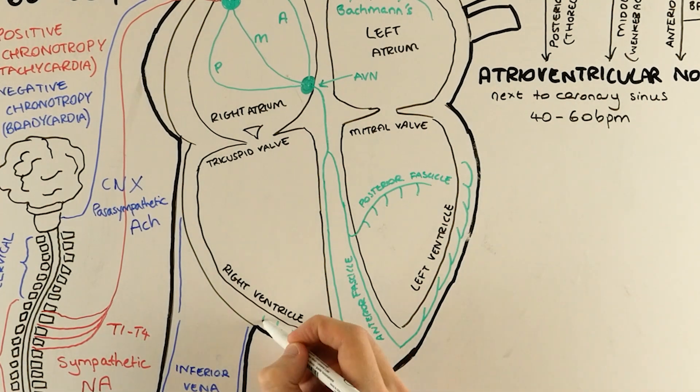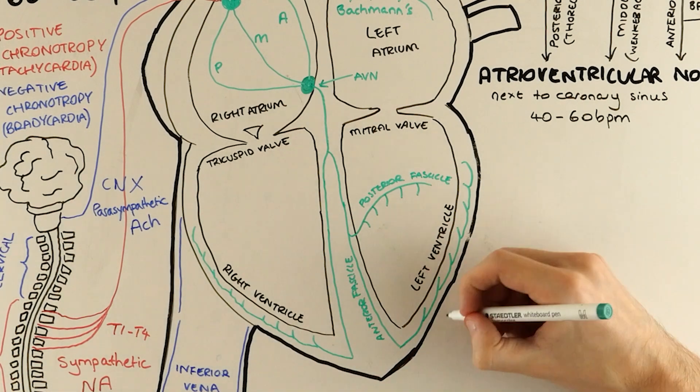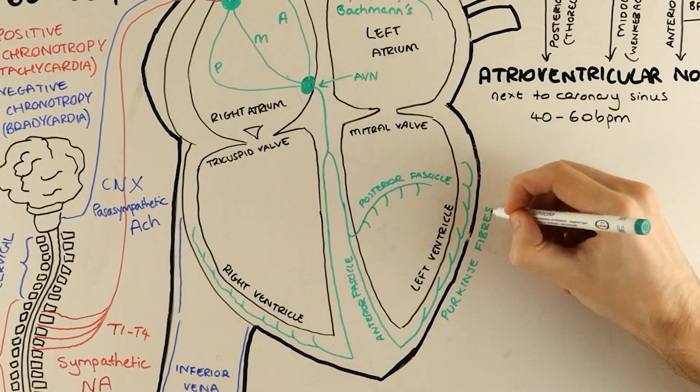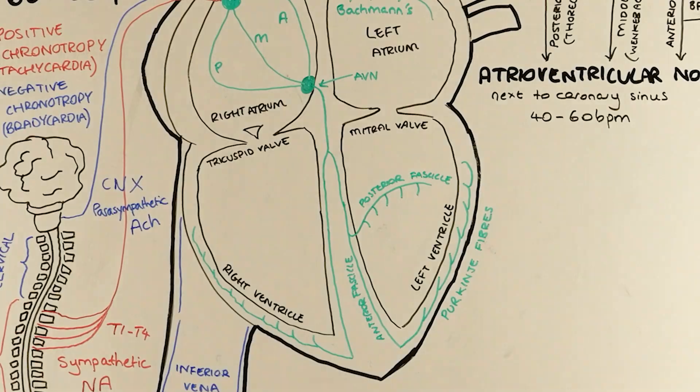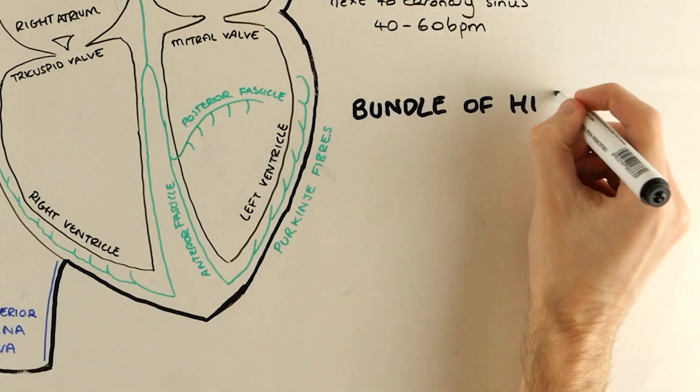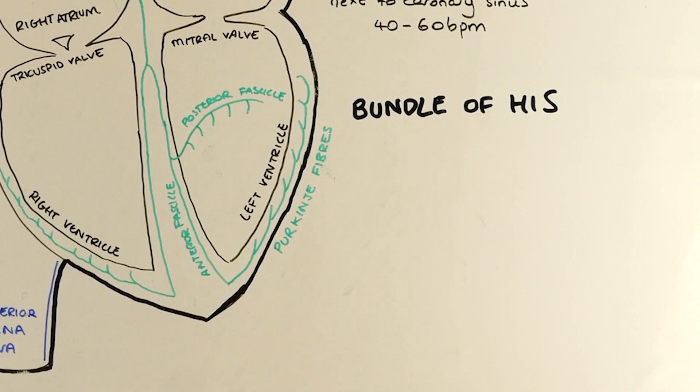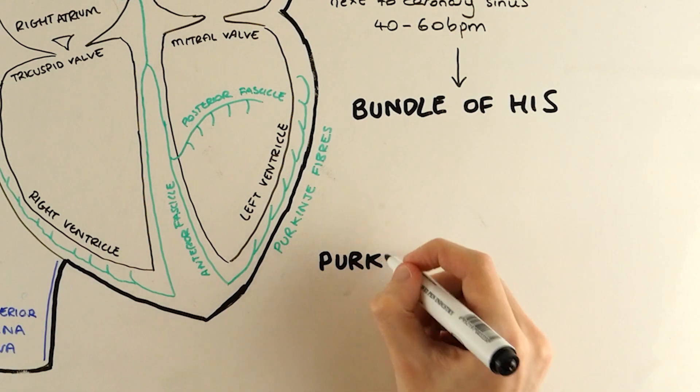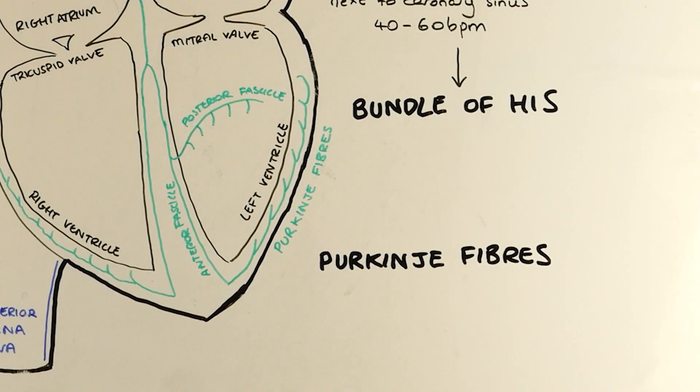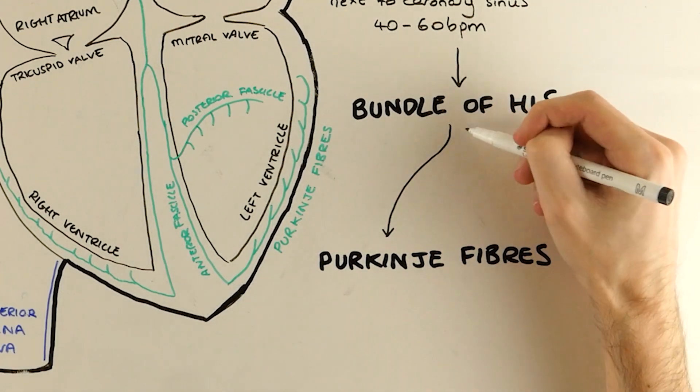Finally, these fascicles give rise to the Purkinje fibres which come up through the subendocardium to supply the walls of each ventricle. When the electrical activity reaches this point, it depolarises the walls of the left and right ventricles, allowing them to contract in a synchronised way from the bottom to the top, and eject blood to the body and the lungs.